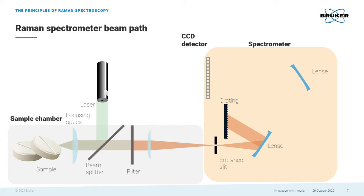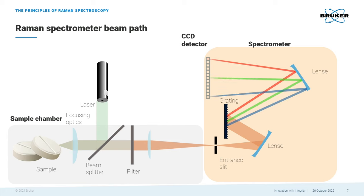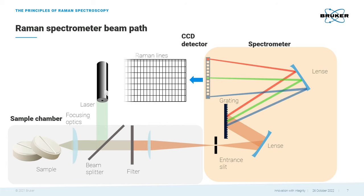This splits the light into its different wavelengths, which are then detected by a CCD detector. This detector transforms the light into Raman lines. These Raman lines are what we usually later perceive as a Raman spectrum.